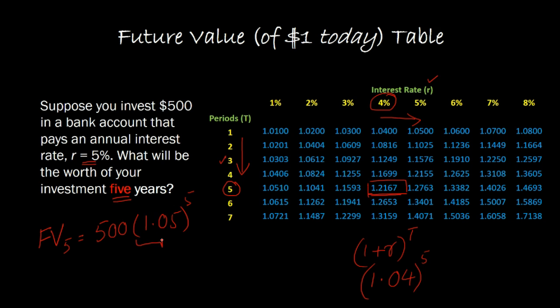this portion has already been calculated for you in this table for an interest rate of 5% and 5 years into the future. If you go to 5%, 5 years in these tables, that number is 1.2763.